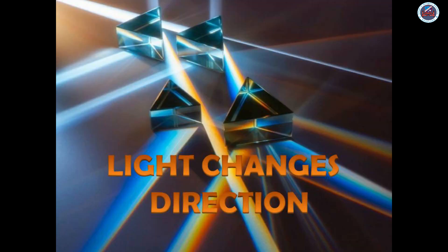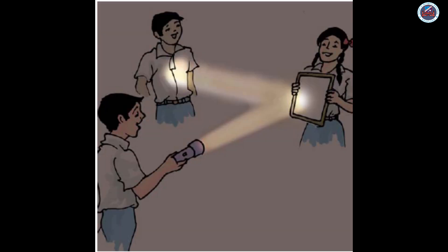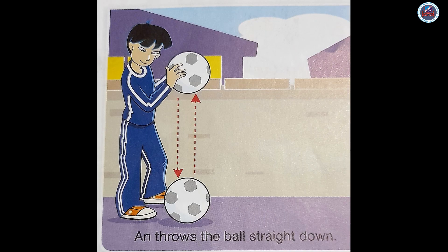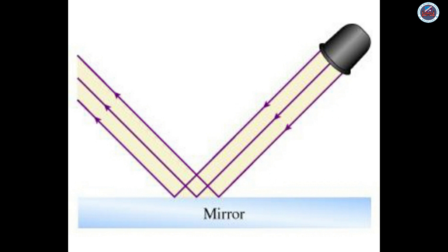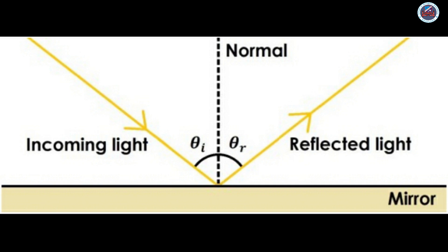Light changes direction. Light travels in a straight line but changes its direction when it comes in contact with an object — just like a ball bouncing off a hard surface. If we throw a ball straight down to the ground, it will bounce back straight up. If we throw the ball at an angle, the ball will bounce at an angle. Similarly, light will also change direction like the ball. We can show how light travels with the help of lines and arrows — we call this line a ray of light. The angle at which the ray of light hits the surface will be the same as the angle at which the ray is reflected.